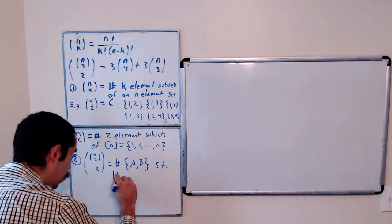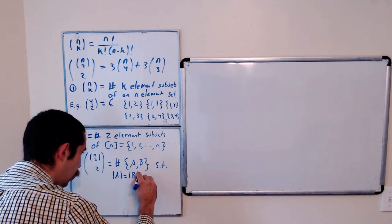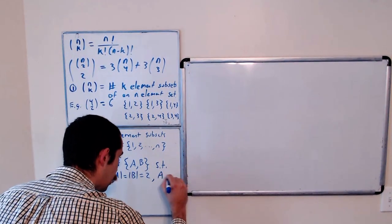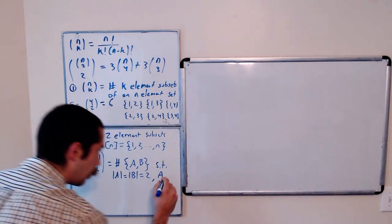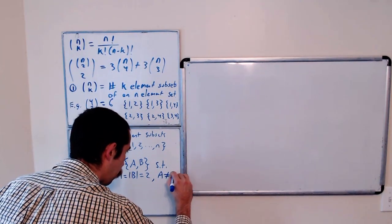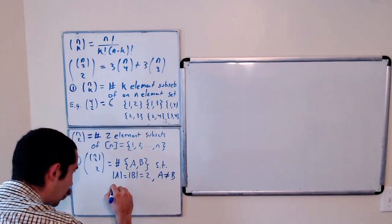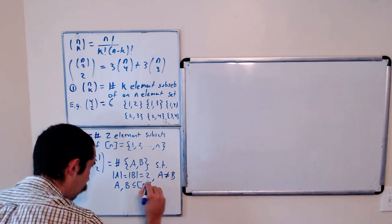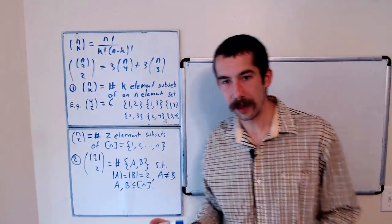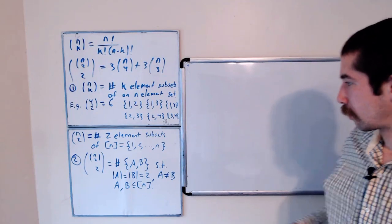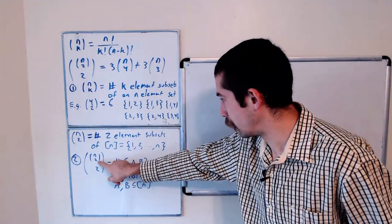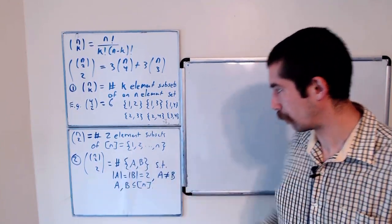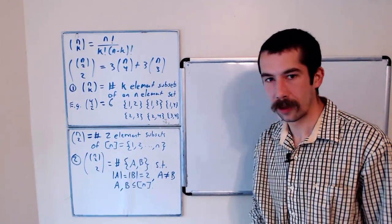So the size of a equals the size of b equals 2. These sets are not equal to each other, because it's a set here, a 2 element set. And they're both subsets of n. So maybe you need to think about why this is true for a little bit. But basically what we're going to do is, we would list out all 2 element subsets of 1 through n, and just choose 2 of them. So that's what we're left with here.